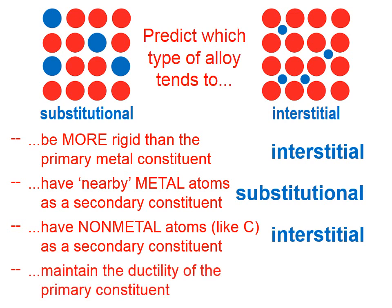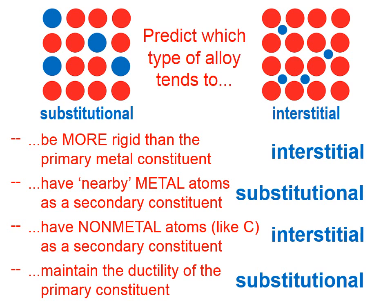Finally, which type of alloy tends to maintain the ductility of the primary constituent? That's kind of the opposite of the first one we looked at — we predicted that an interstitial alloy would be more rigid. A substitutional alloy tends to have about the same ductility as the primary constituent.